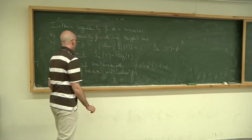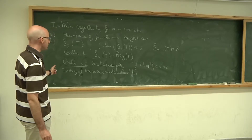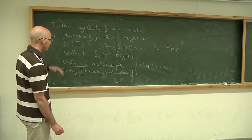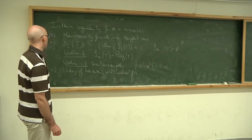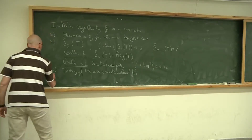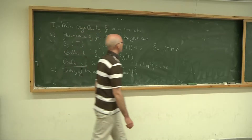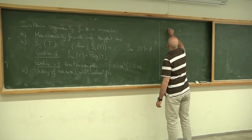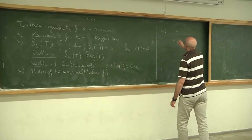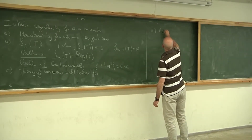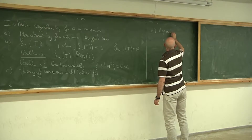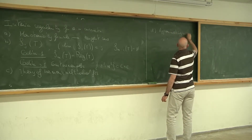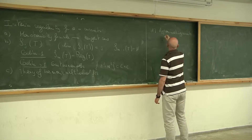Almgren's theory of harmonic multivalued functions gives you that they are regular outside of a set of codimension two in the domain. To get towards Almgren's theorem, we essentially want three things. First of all, we want a way of approximating currents efficiently with multivalued functions.